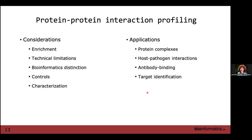One of the biggest pieces for protein-protein interaction profiling is controls. If you're doing pull-downs or affinity purifications, you really need controls to distinguish background from true interacting partners. Proteomics and bioinformatics have advanced so that it's not just a yes or no, but a statistically driven answer — abundance gives you information about what is background versus a real interactor. When doing interaction mapping, consider whether it's completely uncharacterized, whether you have some idea of what should be binding, and whether you have positive controls. Applications include protein complexes, host-pathogen interactions, antibody binding, and target identification.